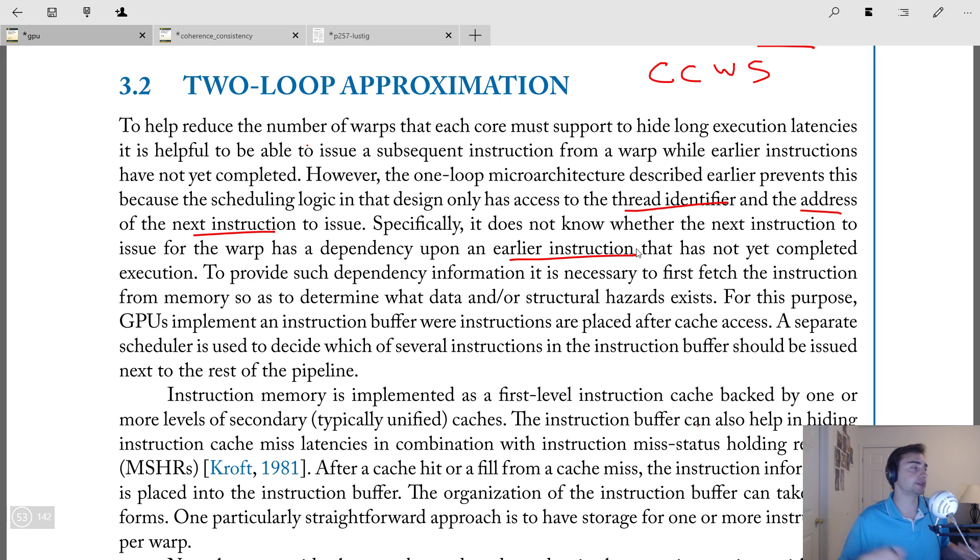So what we're really trying to tackle here is, instead of having to have maybe a ridiculous number of warps to hide long latency instructions, what if instead, if we knew the dependency information, then we would need a smaller number of warps, and we could just issue multiple instructions from those same warps. And all we really need to do is keep track of dependencies. And so in order to do this, in GPUs, we've got an instruction buffer, where instructions are placed after we get them from the instruction cache. And then we have a separate scheduler that decides which of several instructions within this buffer can be issued or should be issued next to the rest of the pipeline. So basically, we're just keeping track within the instruction buffer, if that instruction is ready, if it doesn't have any dependencies.